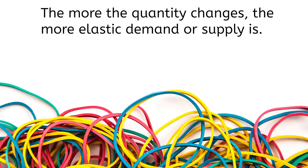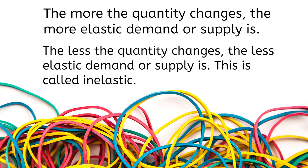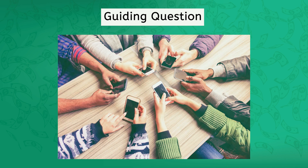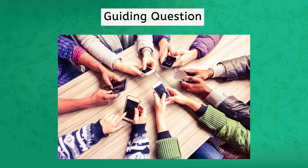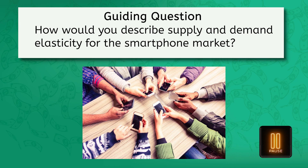The more the quantity changes, the more elastic demand or supply is for that product — it stretches. The less the quantity changes in response to price changes, the less elastic demand or supply is. Economists call that inelastic. Now let's examine a specific good: the smartphone. There are numerous brands and models, each with various features, quality levels, and price points — lots of options for consumers. And producers can ramp production up or down relatively quickly. How would you describe supply and demand elasticity for the smartphone market?